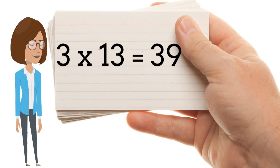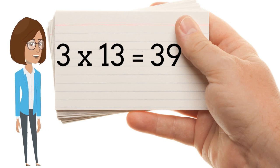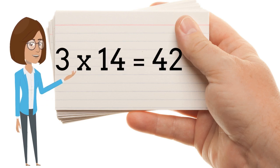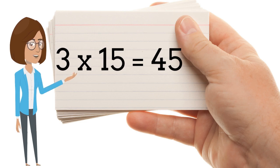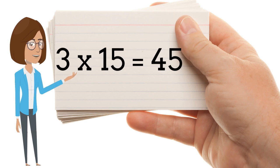3 x 13 is 39. 3 x 14 is 42. 3 x 15 is 45.